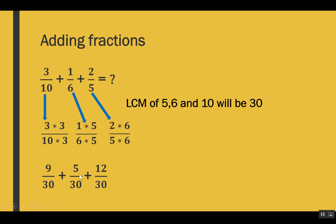After converting, our fractions are: 3/10 becomes 9/30, 1/6 becomes 5/30, and 2/5 becomes 12/30. All denominators are now the same, so we add all the numerators: 9 + 5 + 12 = 26. Our result is 26/30, with 30 as the common denominator.